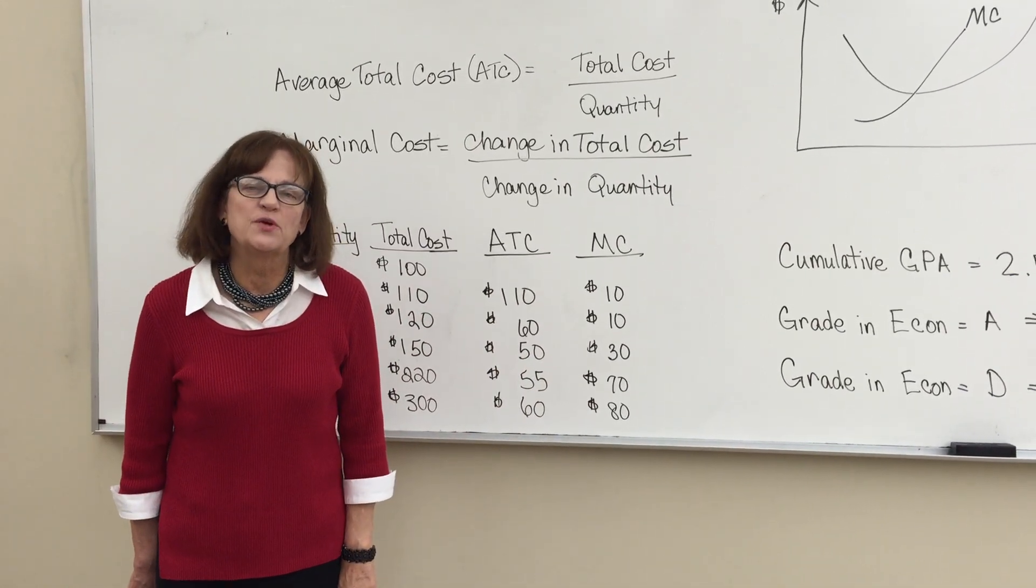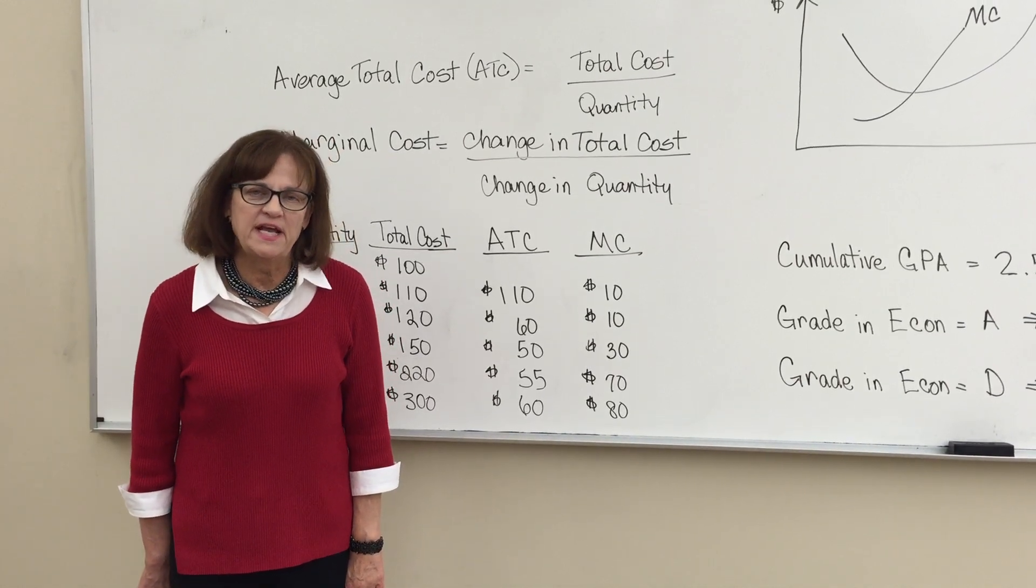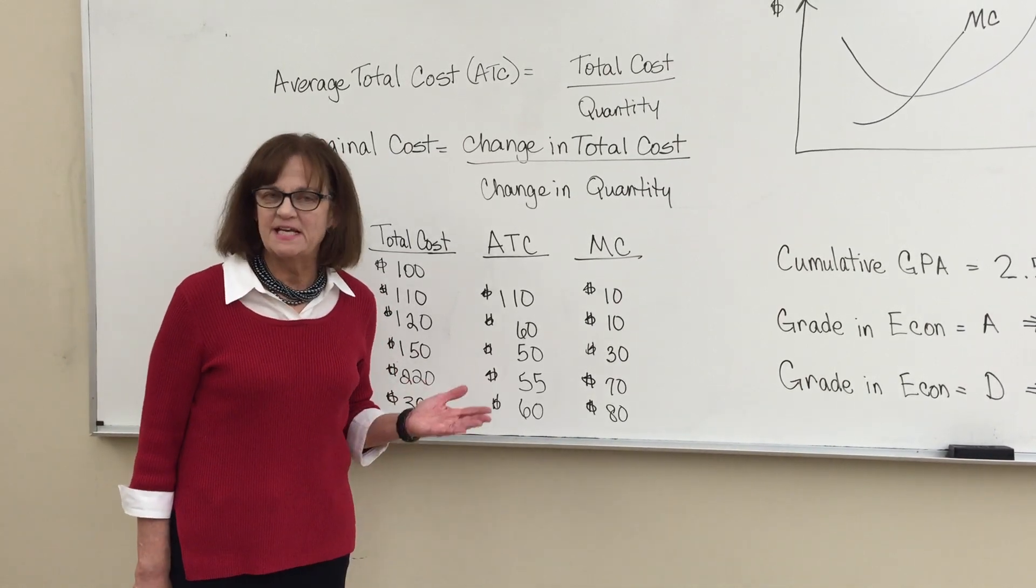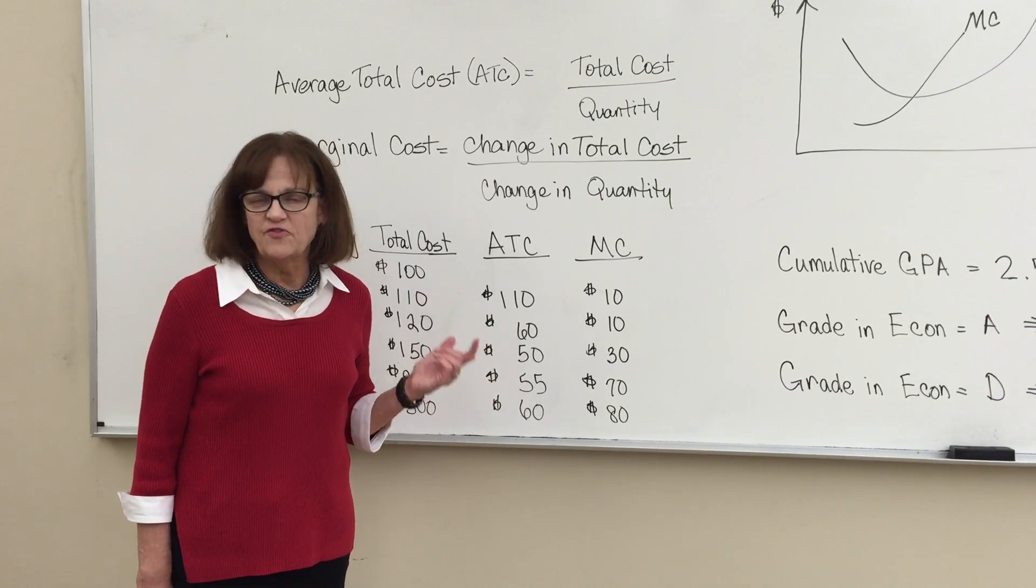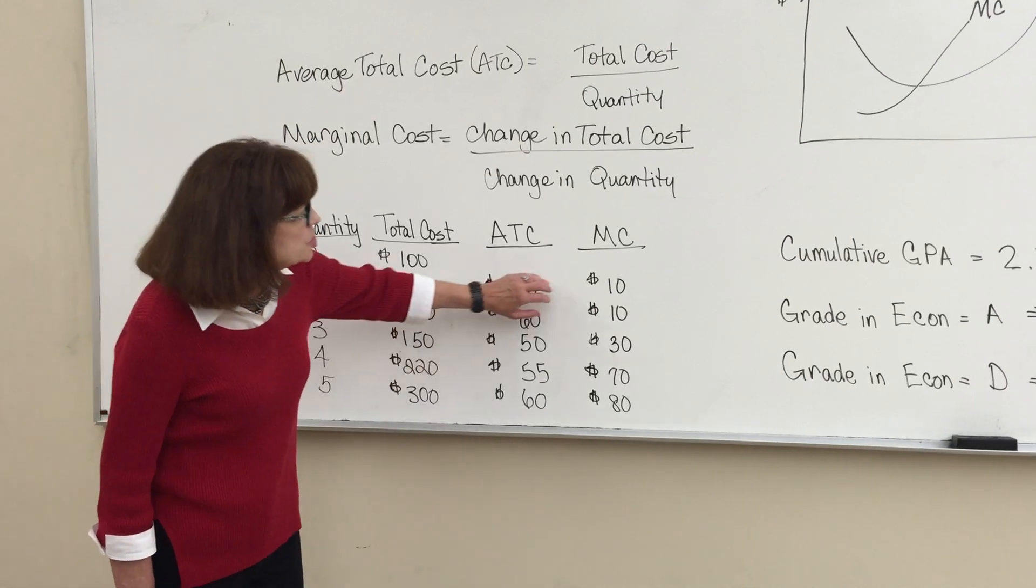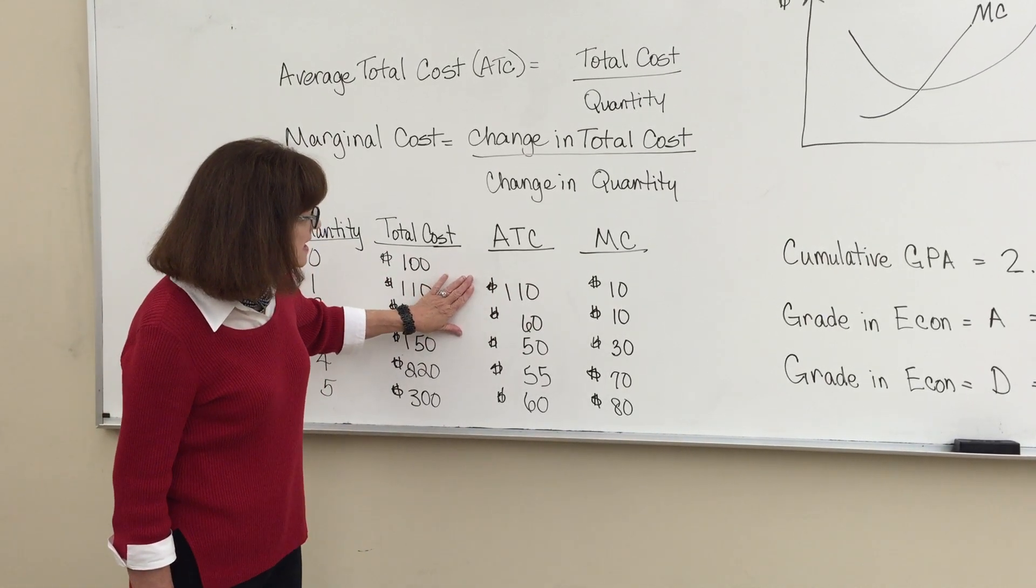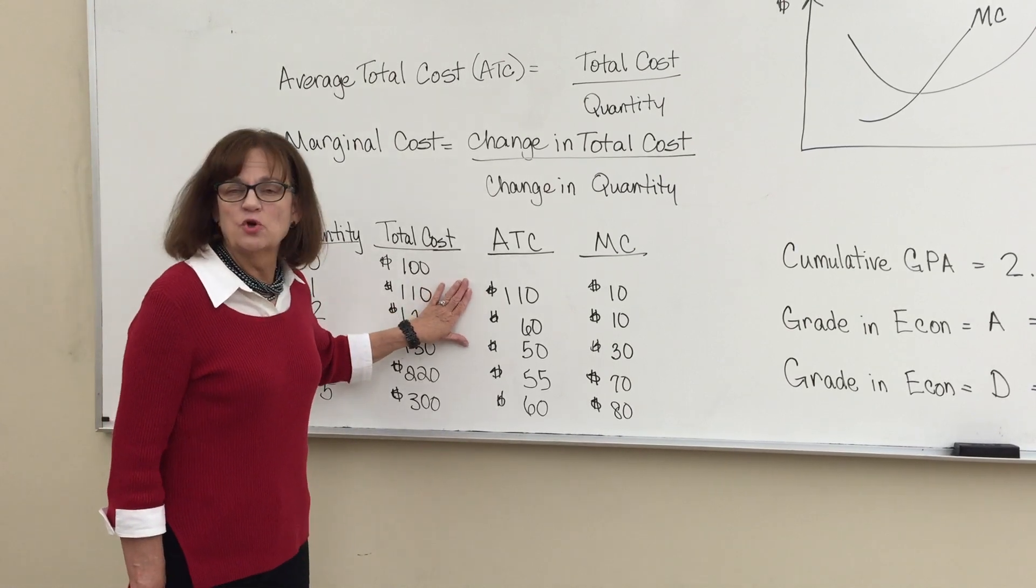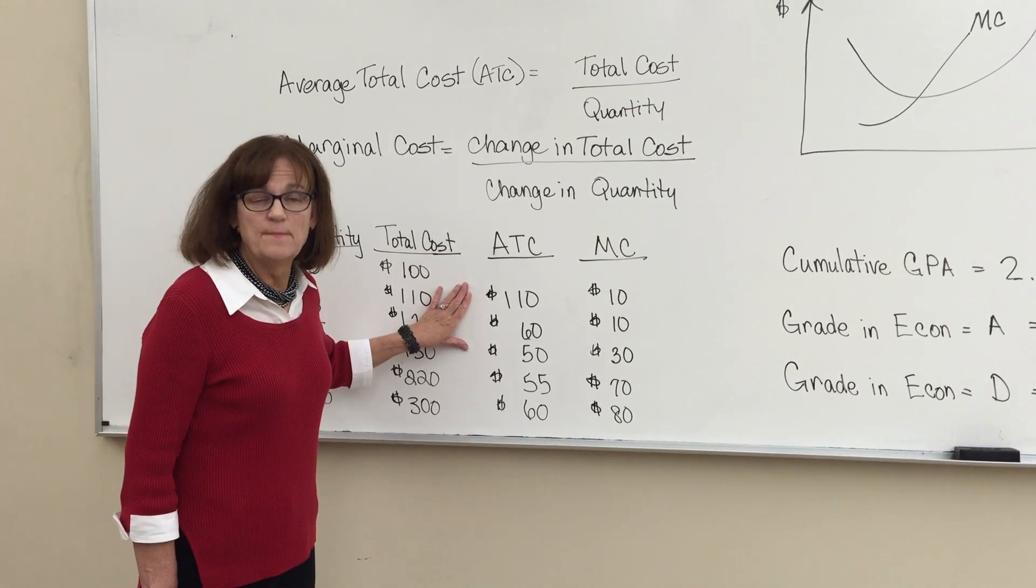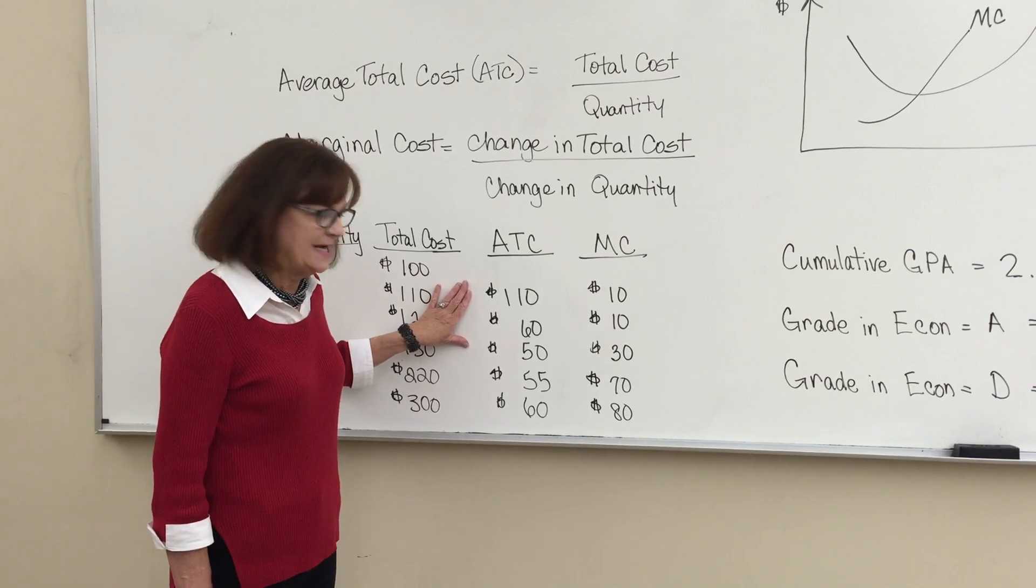But there is a specific relationship between marginal cost and average cost. And you can see it if you look carefully. It is this: As long as the marginal cost is less than the average total cost, the average total cost will be falling. The marginal cost will be dragging the average total cost down.